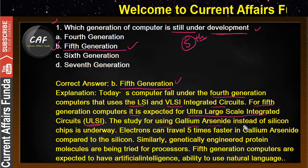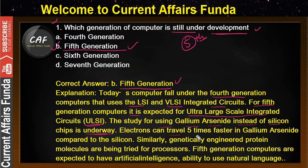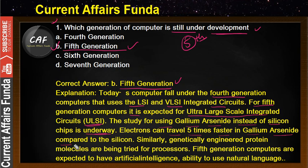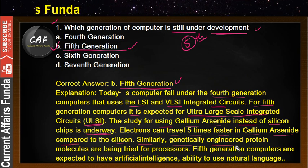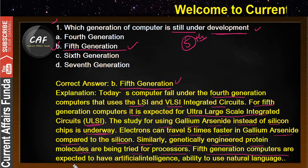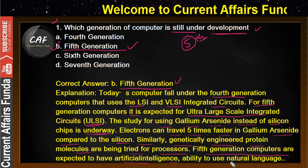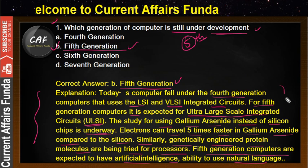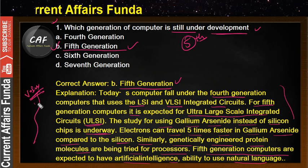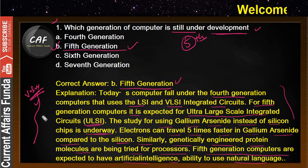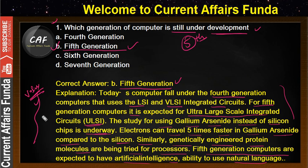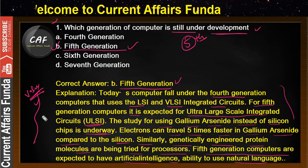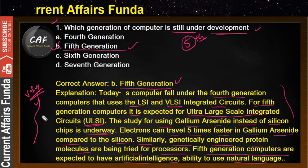For fifth generation computers, ultra large scale integrated circuits (ULSI) are expected. The study of using gallium arsenide instead of silicon chips is underway — electrons can travel five times faster in gallium arsenide compared to silicon. Genetically engineered protein molecules are also being tried for processors. Fifth generation computers are expected to have artificial intelligence and the ability to use natural language. If you know the theory portion, you can easily answer objective questions.